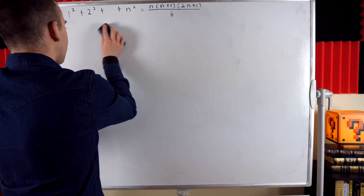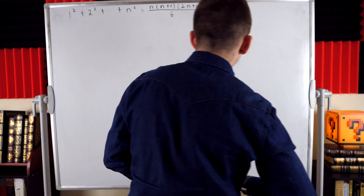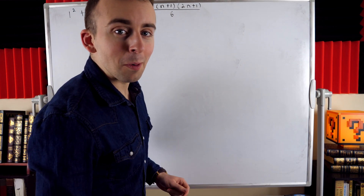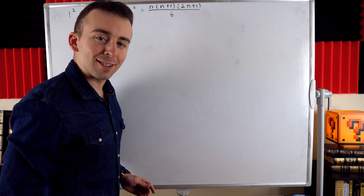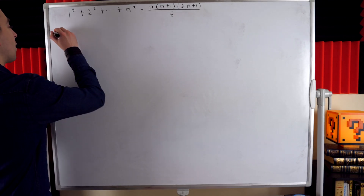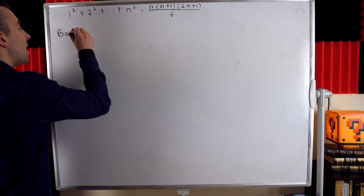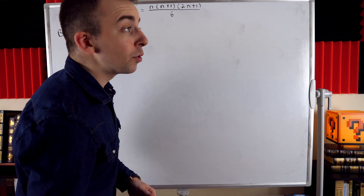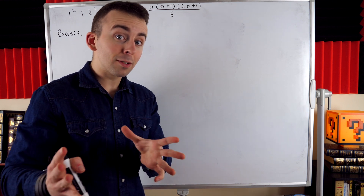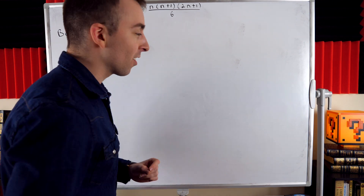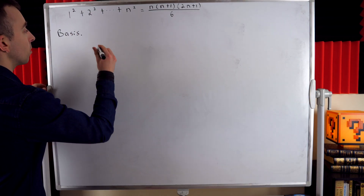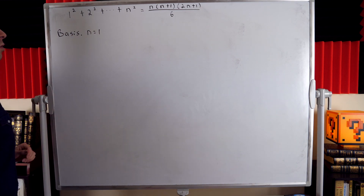Let's get into the proof. Any good induction proof begins with the basis step — call it base case, base step, or basis, it's the same idea. In the basis step of an induction proof, we prove that the result holds for the first number of interest. This is a result about the positive integers, so our first number of interest is n equals 1.